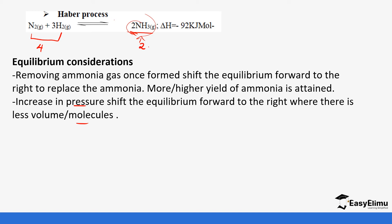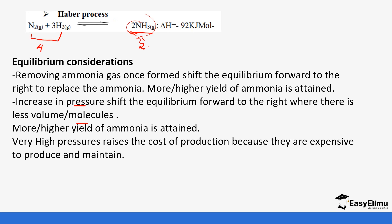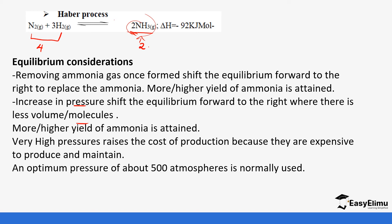Higher pressures favor this reaction and more ammonia is attained. However, very high pressures raise the cost of production because they are expensive to produce and maintain. For optimum conditions, you want conditions that are less costly but still produce maximum yield, so an optimum pressure of around 500 atmospheres is used.